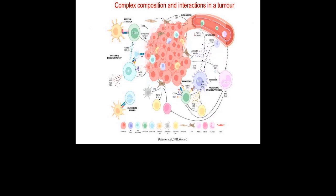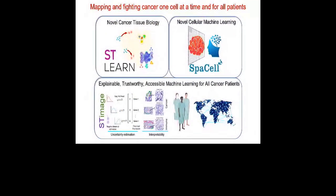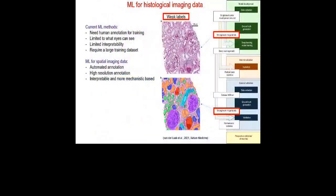The main aim of my team is to fight cancer one cell at a time, and we try to do that for every patient. That means the data needs to be very high resolution, very scalable, cheap, and fast. We believe that through machine learning we are making steps closer to that aim. When we think about traditional machine learning for histological imaging data, the model relies a lot on human labels.